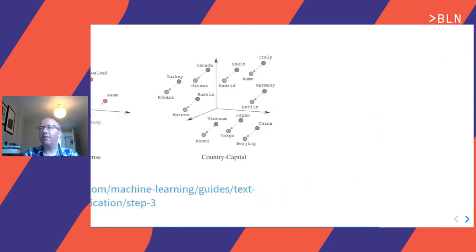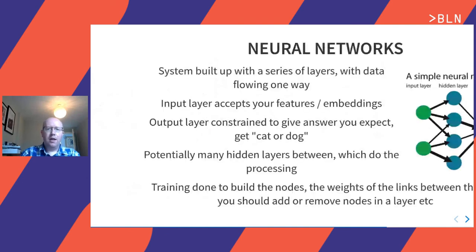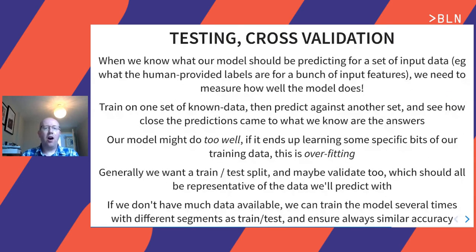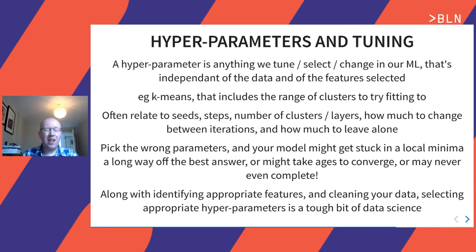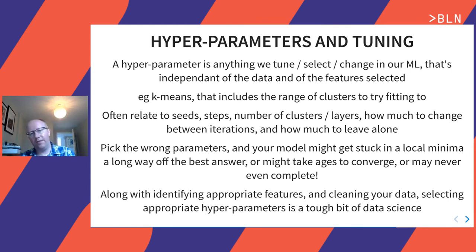A few other words to be aware of. Hyperparameters are basically anything that you — the data scientist — change when you're trying to do training. In k-means that's the number of clusters; often it's number of steps, number of layers, number of things. If you pick the wrong parameters, your model might wander off and be locally tuned to something not ideal. A lot of your time as a data scientist is actually going to be tuning these hyperparameters — should I have a k-means cluster of 50 or 51 or 52? The other big time sink is tuning your input data and cleaning up all the crap that comes from real data.